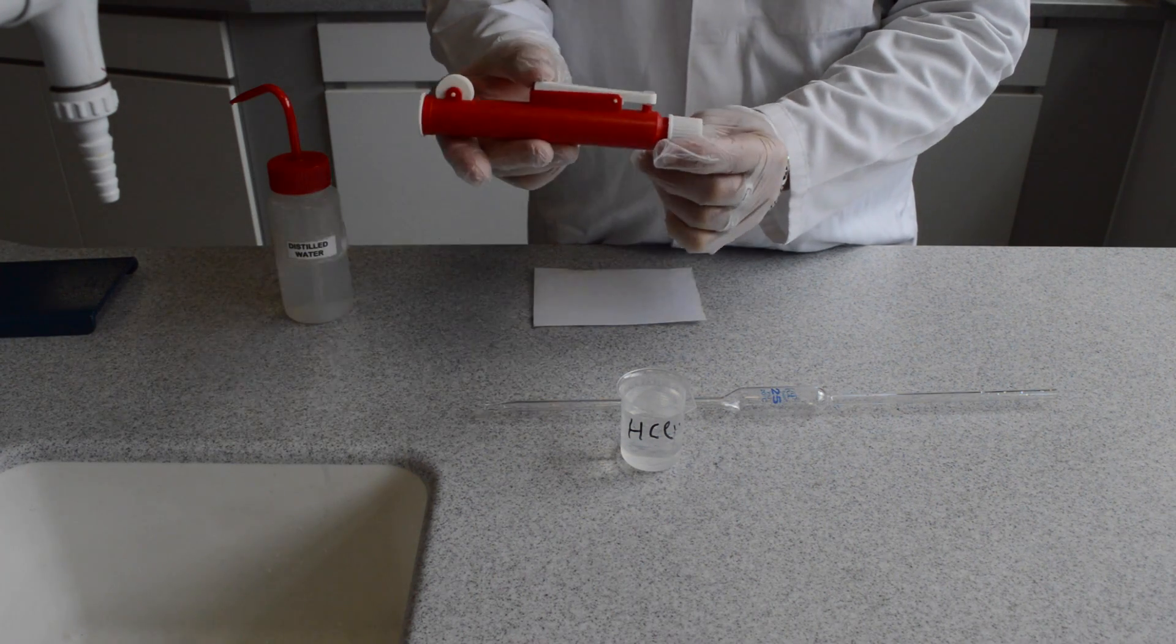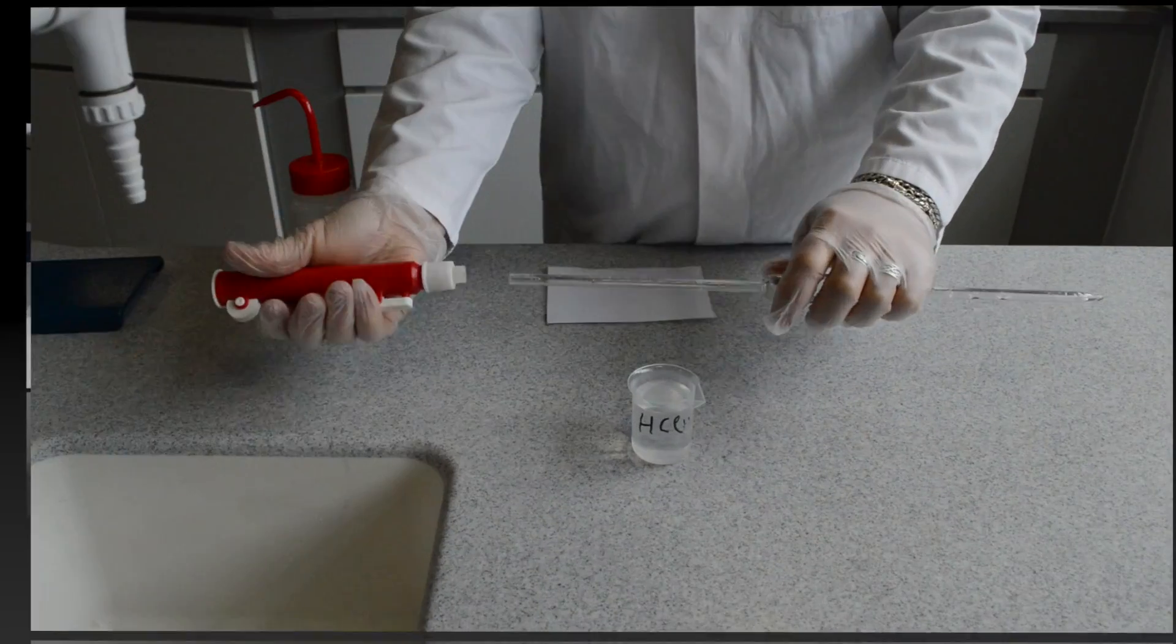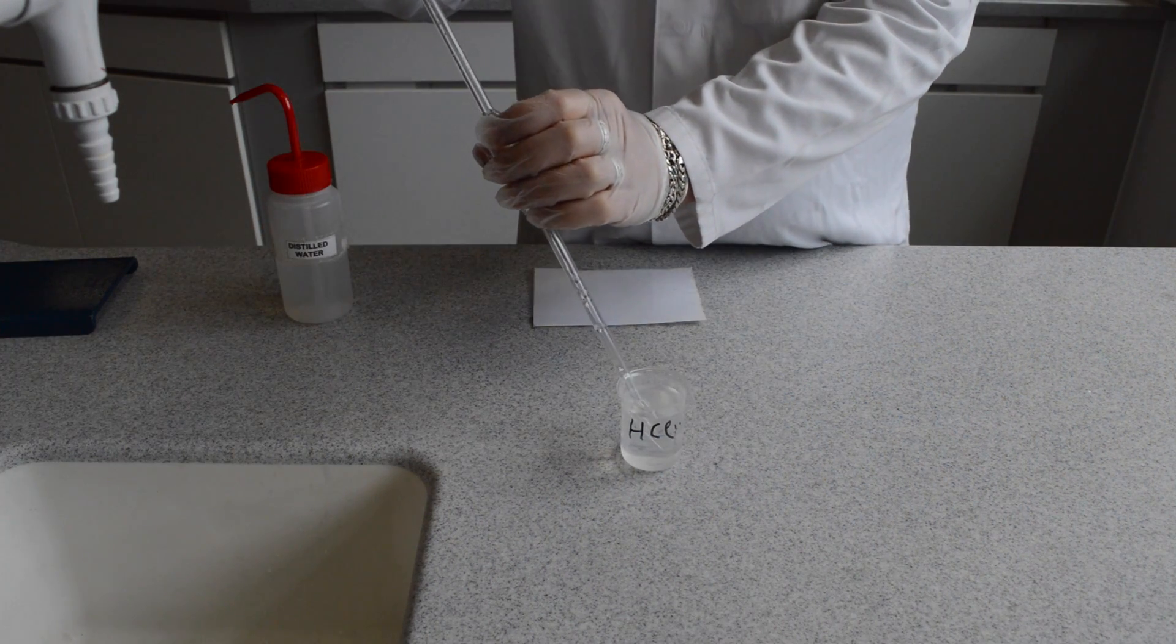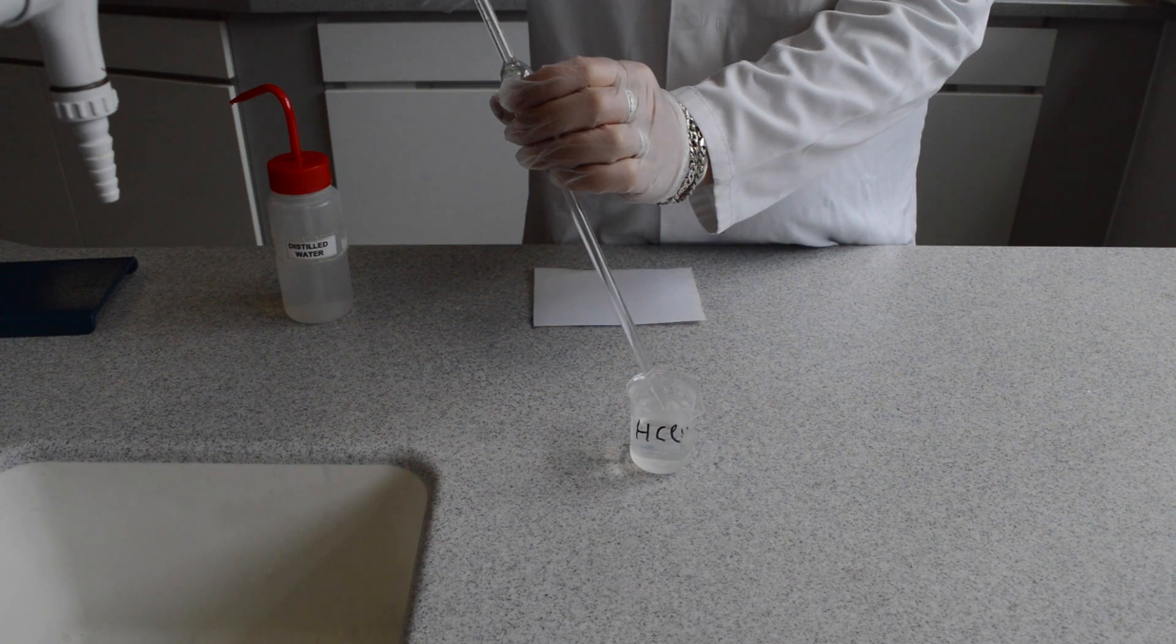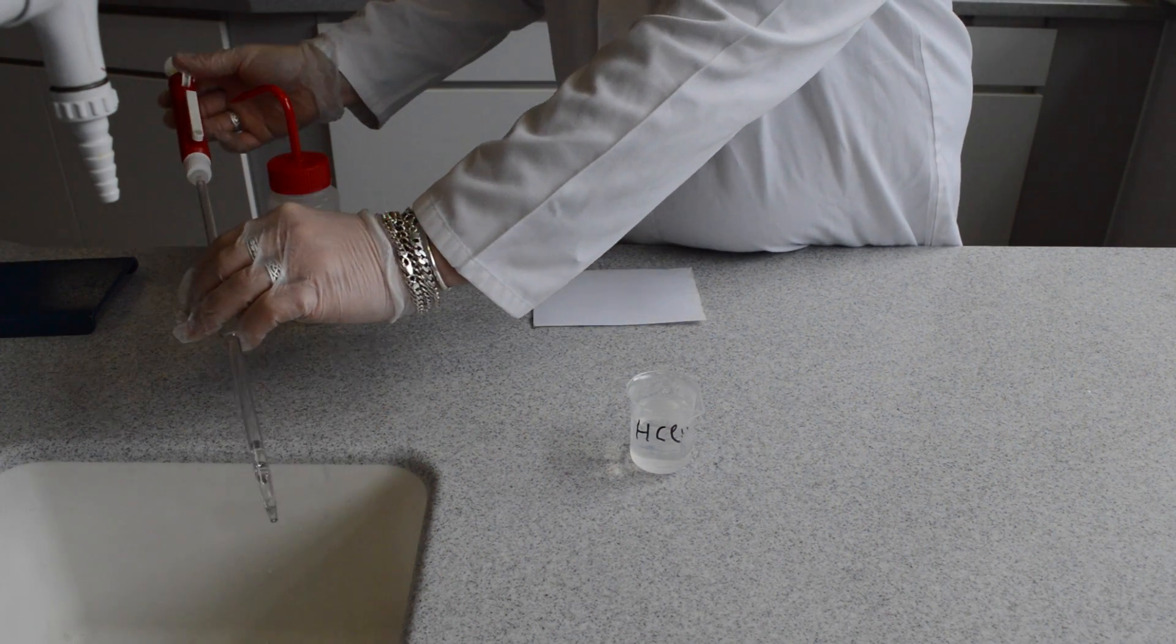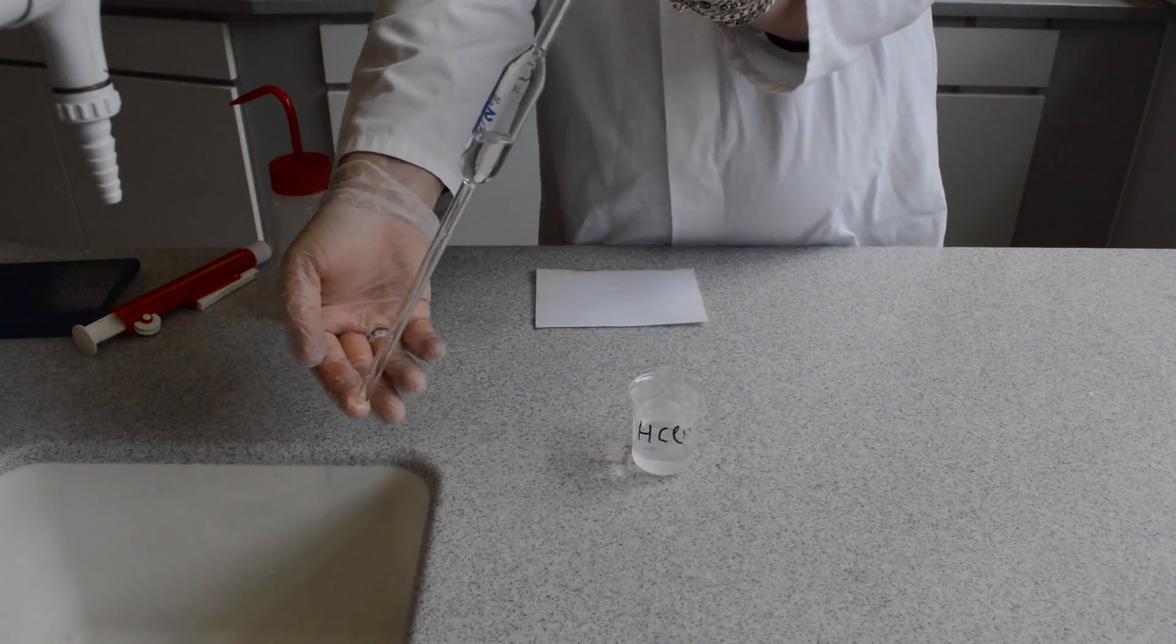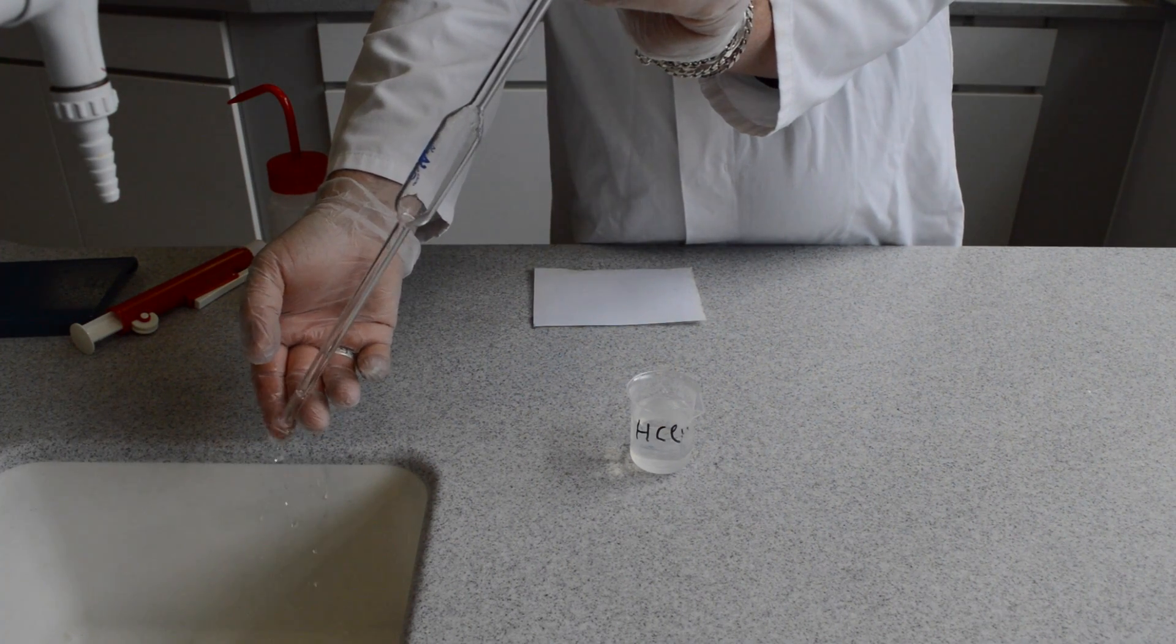As part of your conditioning of your equipment, you need to run some hydrochloric acid through the pipette. This is part of the washing and conditioning process, not part of your titration. Half fill the pipette with some hydrochloric acid, block off the end and tilt the pipette so that the acid washes the entire of the pipette inside. Then discard the acid.